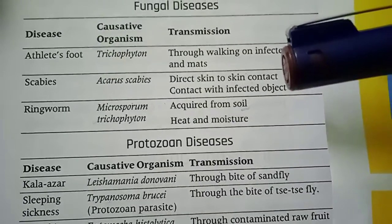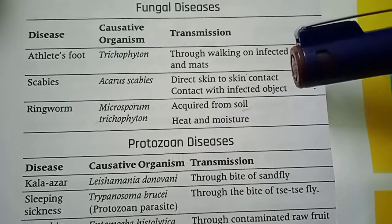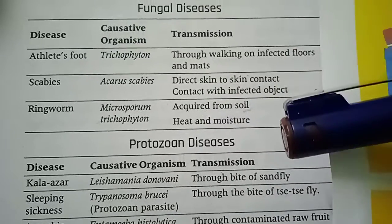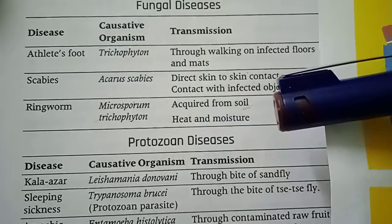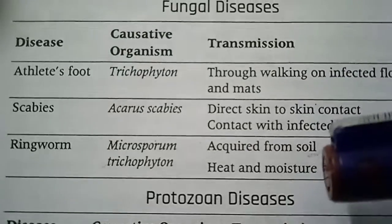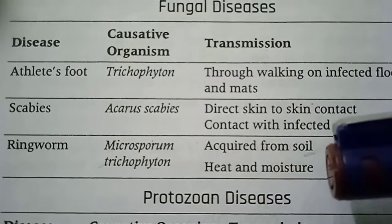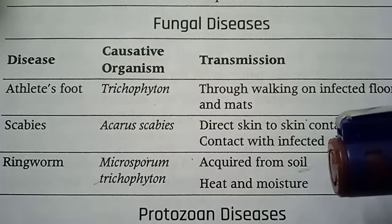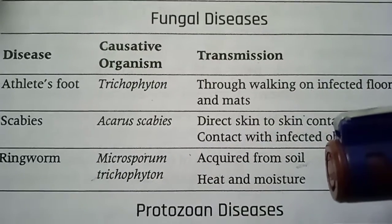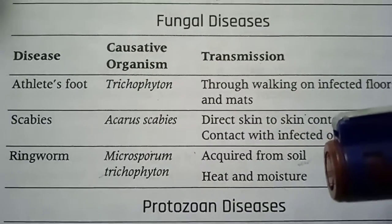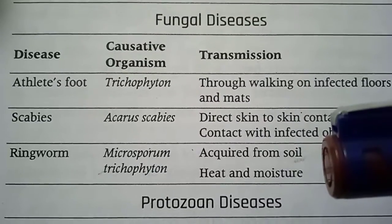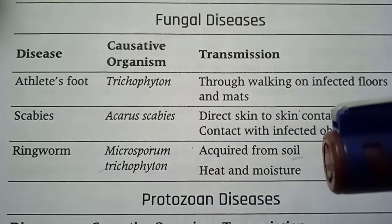Ringworm — the causative organisms are Microsporum and Trichophyton. Transmission occurs from soil, heat, and moisture.